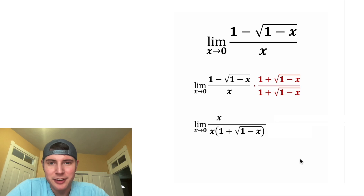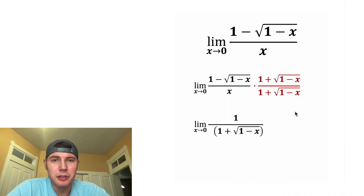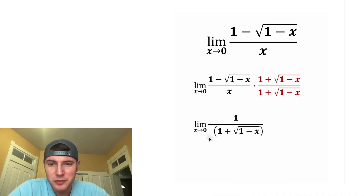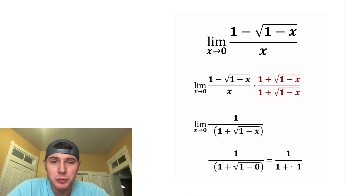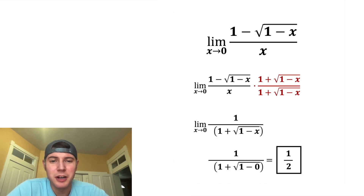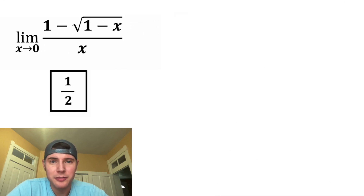Now let's put everything together. The x on top and bottom also cancels, and since there's nothing left on top we put the implied 1. Now let's do direct substitution — plugging 0 in for x, this becomes 1 over 1 plus the square root of 1. And 1 plus the square root of 1 is 1 plus 1, which is 2. So the limit as x approaches 0 is equal to 1 half. Let's put a box around it.